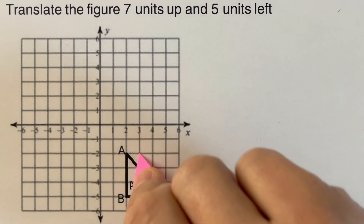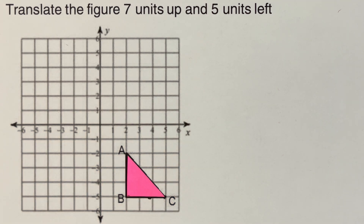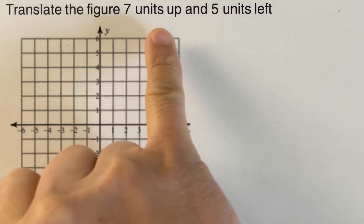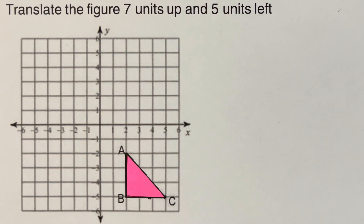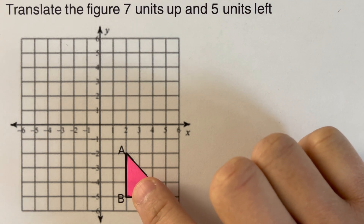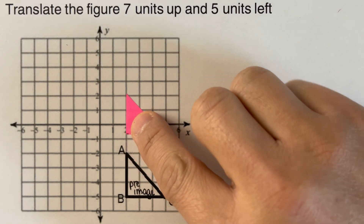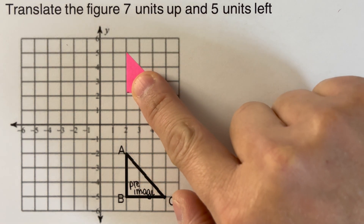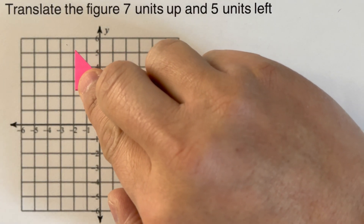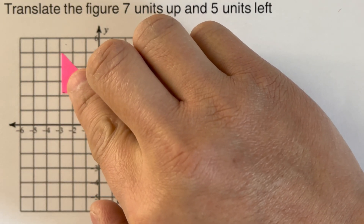So I have here this triangle on this piece of paper. What we are going to do is slide this triangle seven units up and five units left. So I go ahead and move it seven units up — one, two, three, four, five, six, seven — and then five units left — one, two, three, four, five. So that means this is where the translated figure is going to sit.